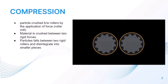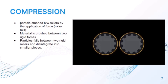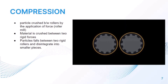The second mechanism of size reduction is compression. Particles are crushed between rollers by the application of force — for example, in a roller mill where material is crushed between two rigid forces. Particles fall between two rigid rollers and disintegrate into smaller pieces, as shown in the figure.